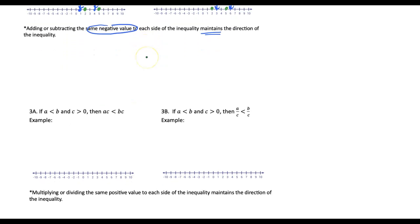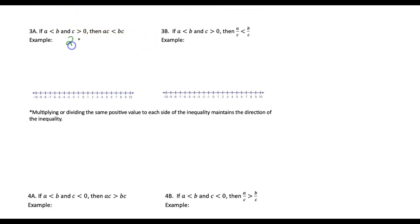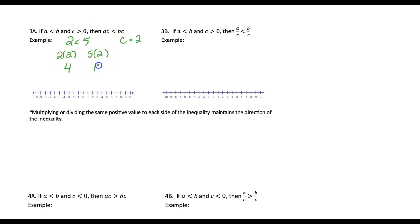Let's look at property 3. Starting with 2 is less than 5, using c greater than 0 — specifically c equals 2 — multiply both sides: 2 times 2 is 4, and 5 times 2 is 10, and that inequality is maintained. Here was 2 and here was 5, with 2 on the left. After doubling, 2 became 4 and 5 became 10, but 4 stayed left of 10. They just got farther apart.